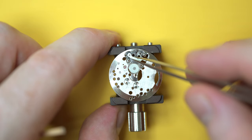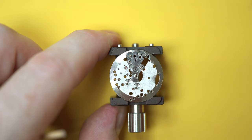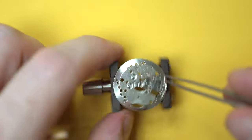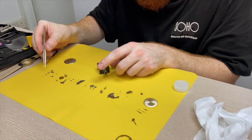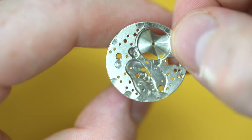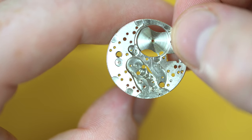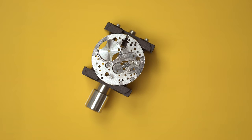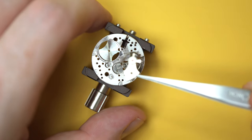I've flipped the watch over and we're almost finished. So I'm now just finalizing the disassembly. So we've got the keyless works and the motion works here, which is quite simple. And you can see I've got all the components laid out, as I mentioned earlier. And that's it. The disassembly is complete. But I'm not going to pat myself on the back just yet because the disassembly is actually the easiest part.